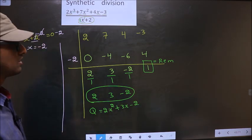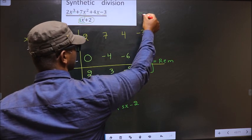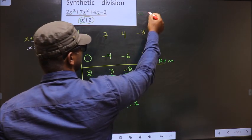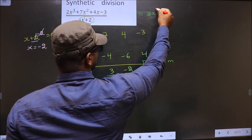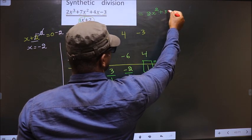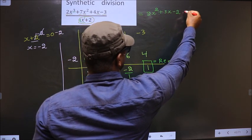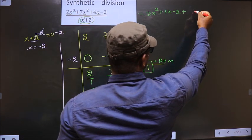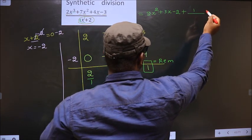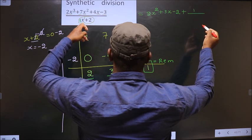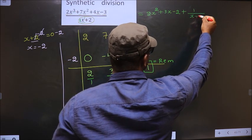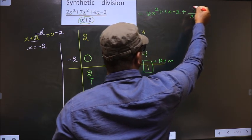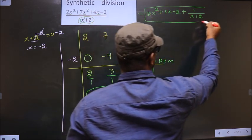Okay. So now this equal to. 2x square plus 3x minus 2 plus reminder is 1. 1 by. Reminder will get same denominator as this. That is x plus 2. So this is our answer.